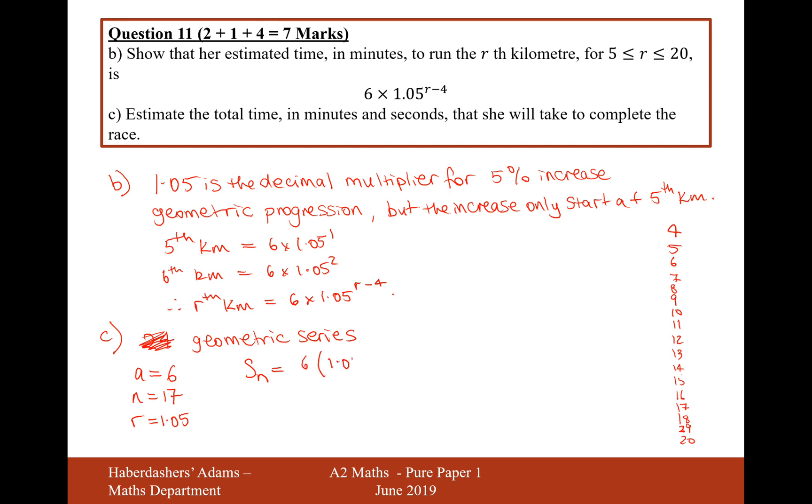And then r is going to be 1.05. So the summation is going to be 6 brackets, 1.05 to the power of n plus 1. So it'll be 18 minus 1 over 1.05 minus 1. Actually, no, it's to the power of 17. So it's going to be 1.05... 155.0421981. Then we'll add those 18 minutes on it for the first 3 kilometers.